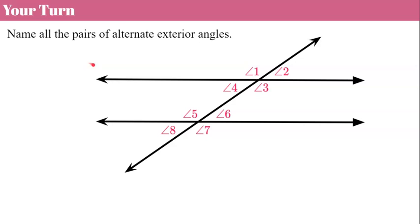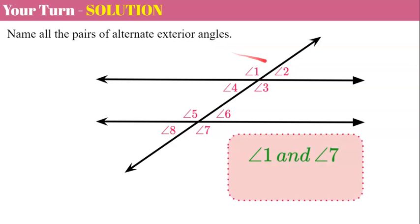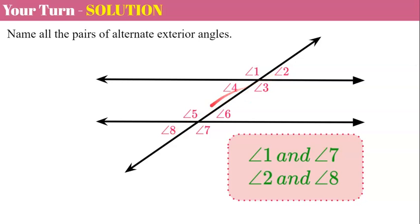Now use this diagram to name all the pairs of alternate exterior angles. Welcome back. Angle 1 and angle 7 — on alternate sides of the transversal, left and right, and both exterior angles. And angle 2 and angle 8 — both exterior angles on alternate sides of the transversal, right side and left side.